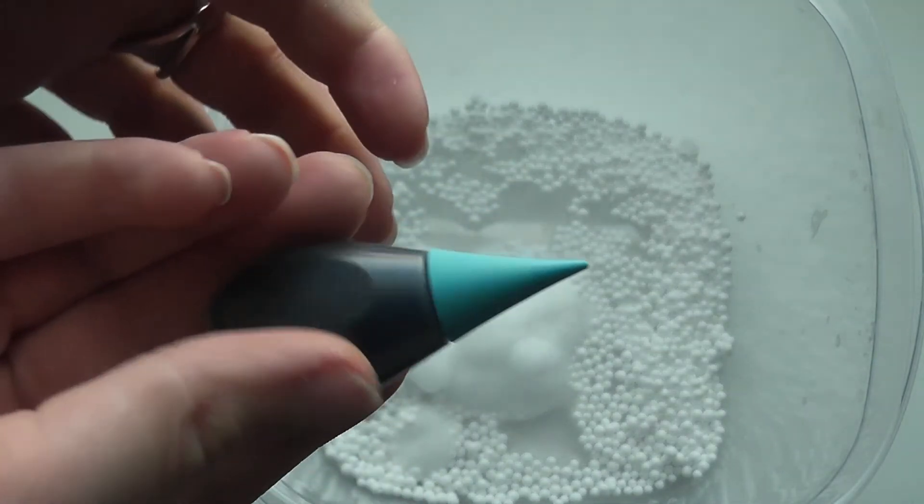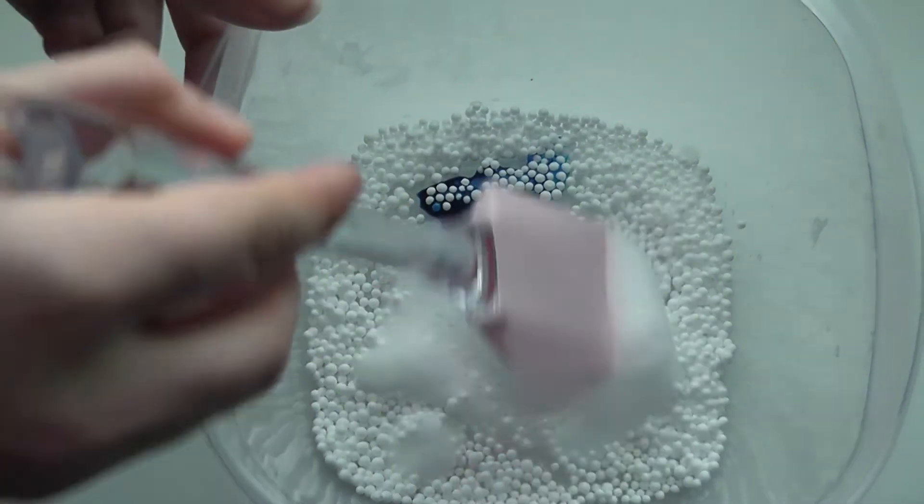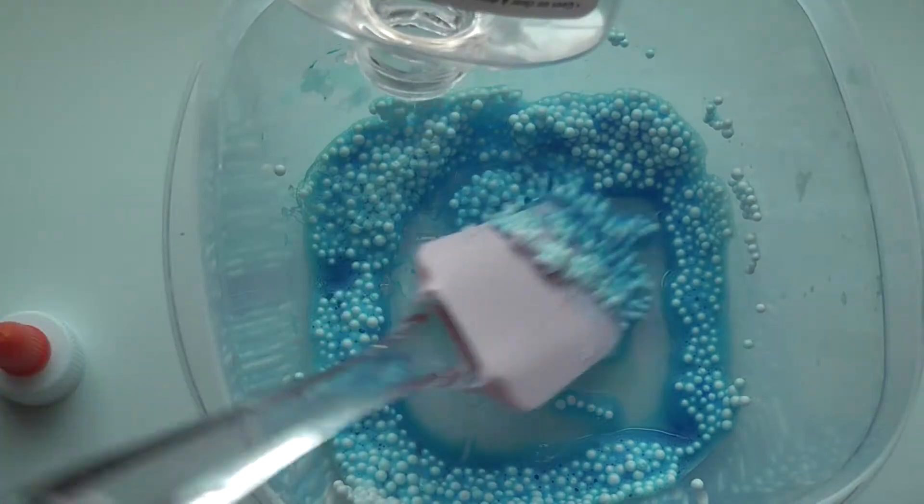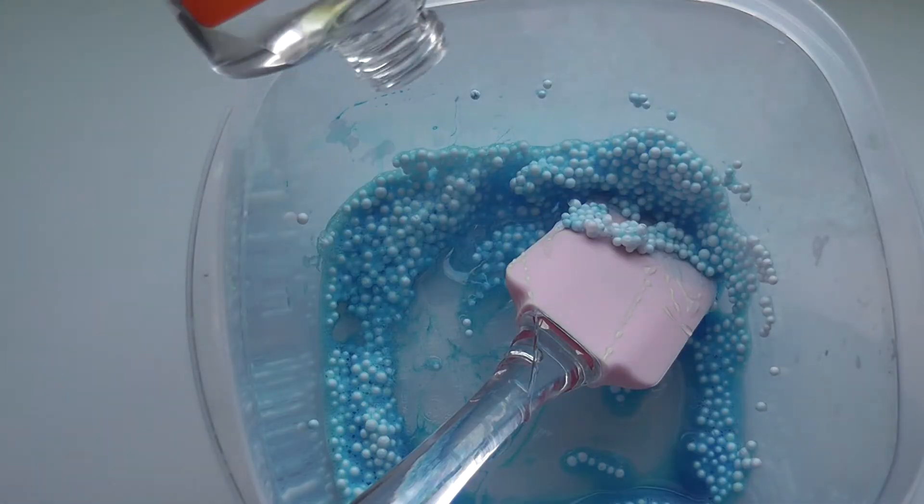Then you want to add in some food coloring of your choice—this is optional. Then I just mix this, and you want to add in some clear glue. I had already added some. There's my bunny hopping around. Her name is Coco. She's so cute.